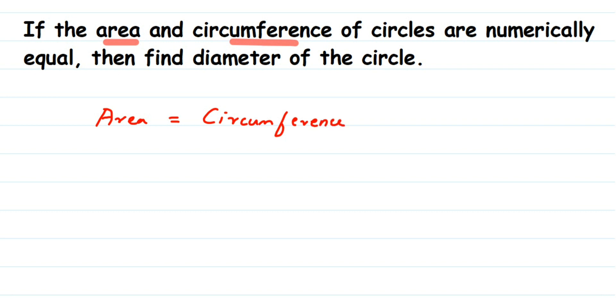So area of circle is πr² and circumference of circle is 2πr. Now we're going to find out the value of r. If you see here, in both formulas we have π and they are present in both LHS and RHS, so we can cancel here.